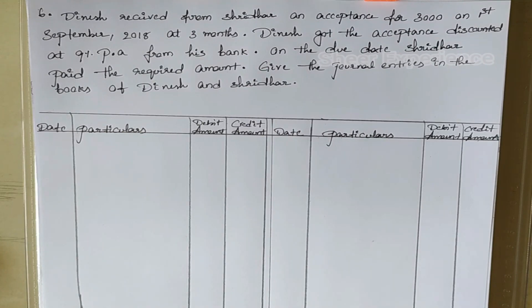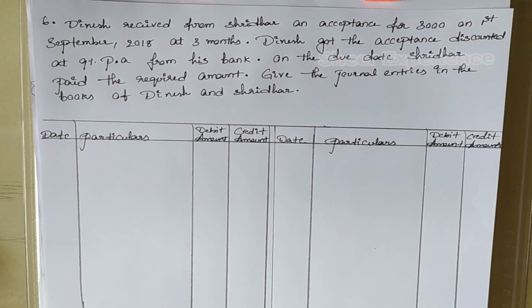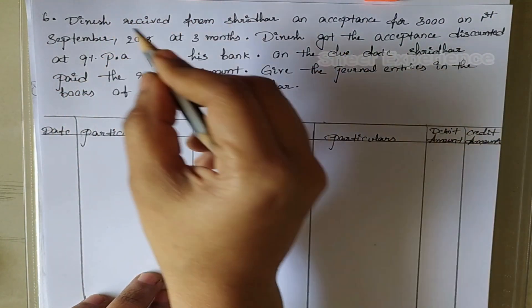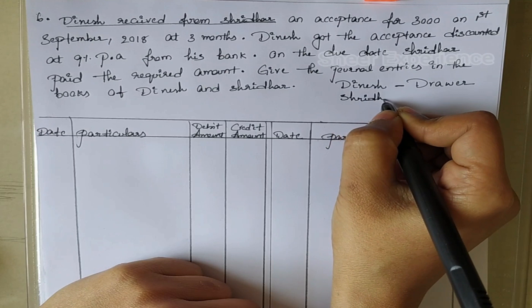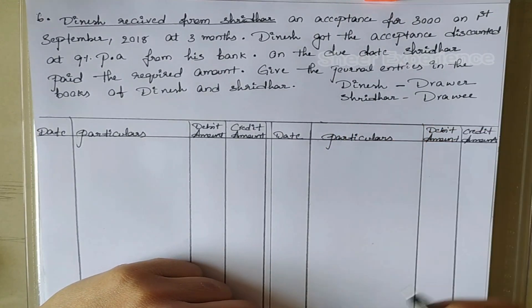Our next question: Dinesh received from Shridhar an acceptance for 3000 on 1st September 2018 at 3 months. Dinesh got the acceptance discounted at 9% per annum from his bank. On the due date Shridhar paid the required amount. Give the journal entries in the books of Dinesh and Shridhar. Here Dinesh is the drawer and Shridhar is the drawee. Since sale has already happened and the acceptance is given by Shridhar, we need to write the journal entry only for acceptance.